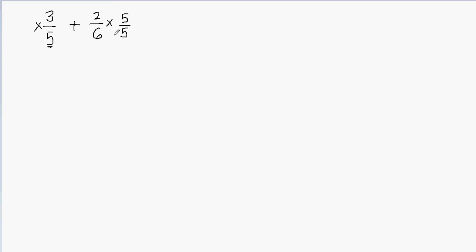Because 5 over 5 equals 1, so I haven't changed the value of the fraction — I've generated an equivalent fraction. When you multiply the numerators and denominators, the new generated fraction will be equivalent to the original. Now for this fraction, 3 fifths — I will multiply it with the denominator of the other fraction, which is 6. So I'll multiply this fraction by 6 over 6, because 6 over 6 is 1 and I'm not changing the value of the fraction.